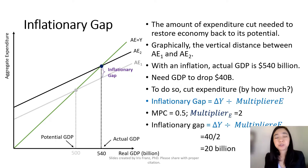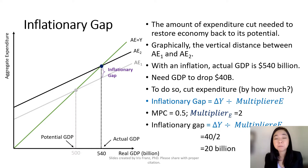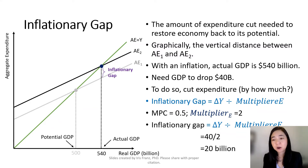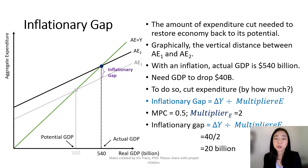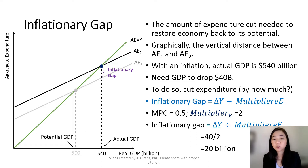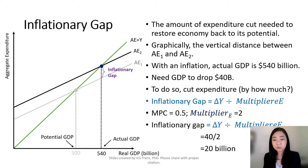Now we're ready to talk about our inflationary gap. By definition, the inflationary gap is equal to the amount of expenditure cut needed in order to restore our GDP back to its potential. So supposing in our economy, we have consumers trying to buy too much goods — more than the producers can produce — and as a result, we're going to have inflation.